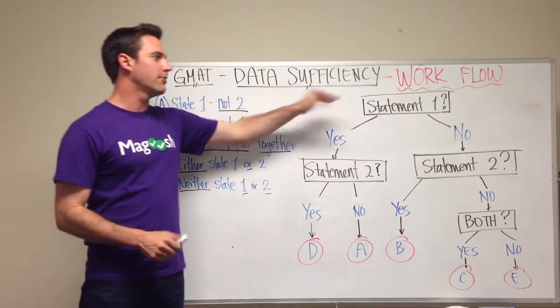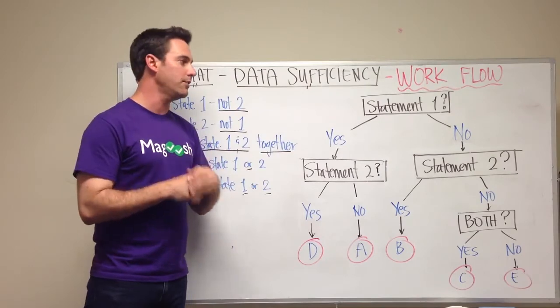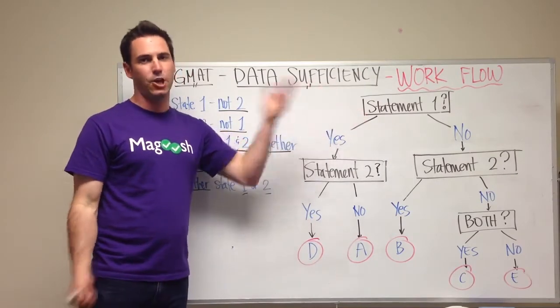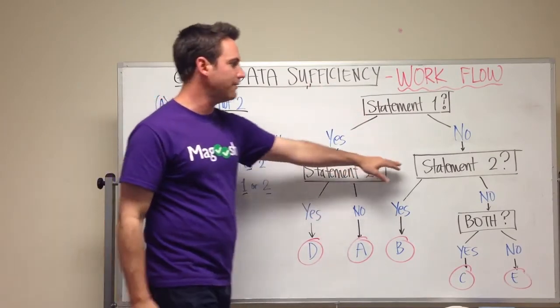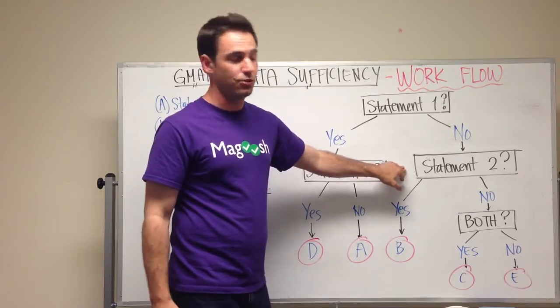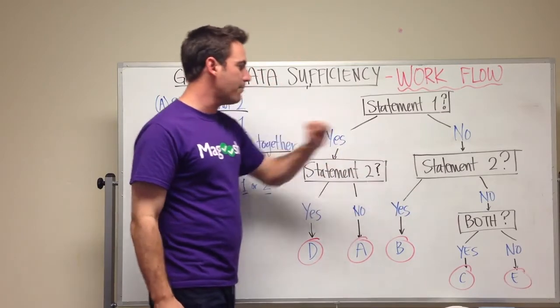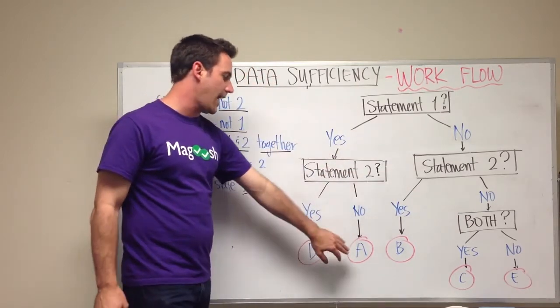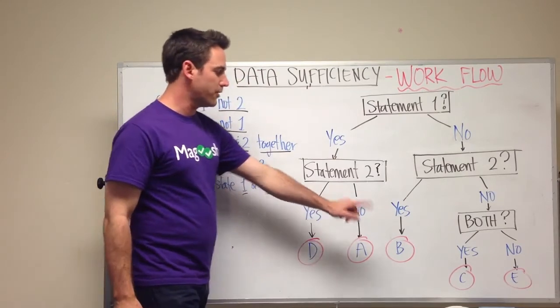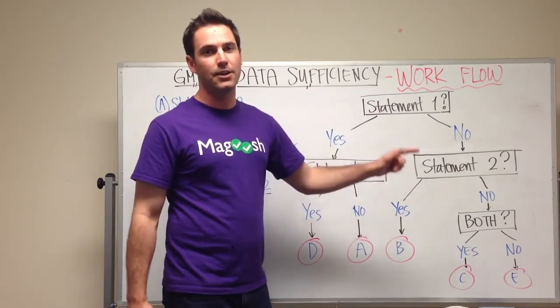If at the beginning when you're evaluating statement 1, you realize statement 1 doesn't help you solve the problem, then you still have to come and evaluate statement 2, and at that point you've eliminated A and D, and you're just focusing on either it's going to be B, C, or E.